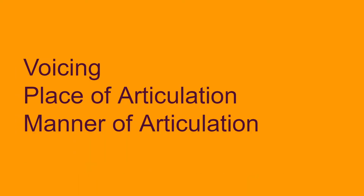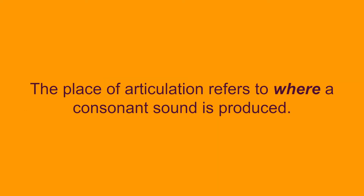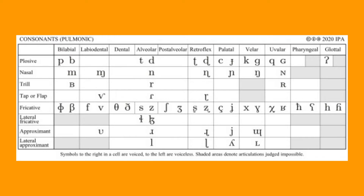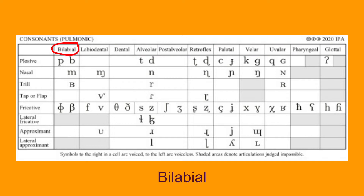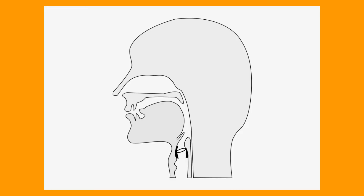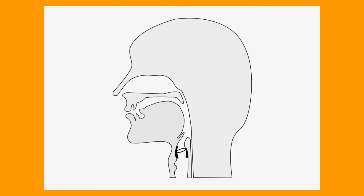Next, let's talk about place of articulation. The place of articulation refers to where a consonant sound is produced. In this chart, all of the columns denote places of articulation. There are bilabial, which refers to the lips, and labiodental, which refers to the lower lip and upper teeth.